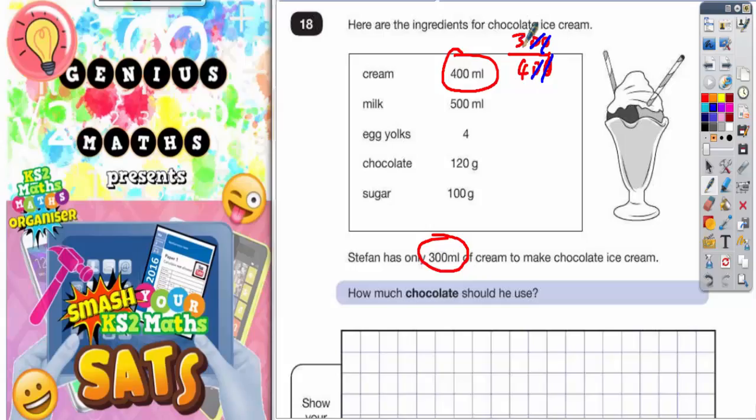So actually he's only got three quarters of what he needs. Another way of saying that is that 300 is three quarters of 400. So what we need to do for the other ingredients is work out three quarters of the other ingredients as well.